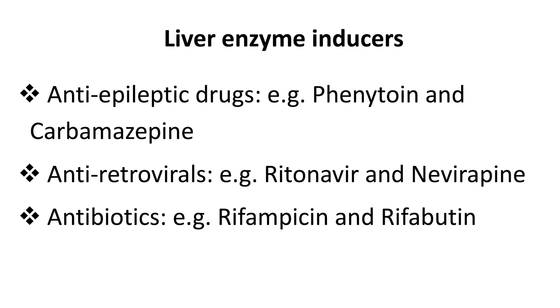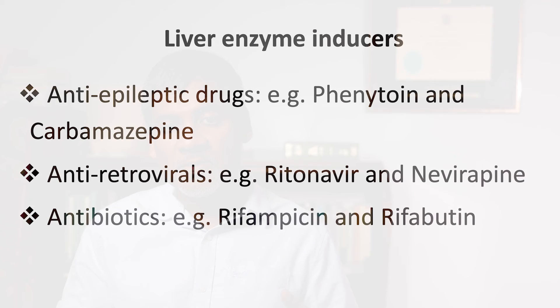Question nine: what drugs may interact with the combined oral contraceptive pill? The problem drugs are enzyme-inducing drugs, which can increase the metabolism of both oestrogens and progestogens, thereby decreasing the efficacy of the COC. Liver enzyme-inducing drugs include some anti-epileptic drugs like phenytoin and carbamazepine, some antiretrovirals like ritonavir and nevirapine, and some antibiotics like rifampicin and rifabutin. Women using enzyme-inducing drugs should ideally switch to an alternative method such as a copper IUD or levonorgestrel IUS.